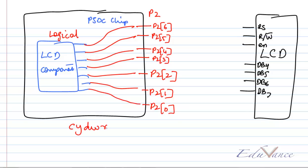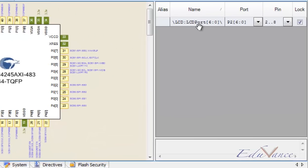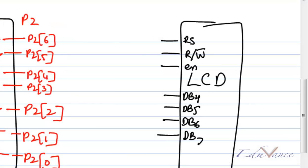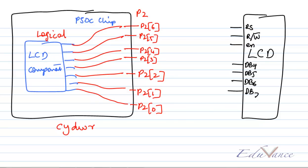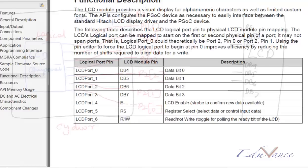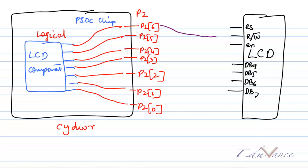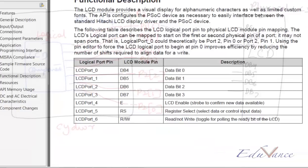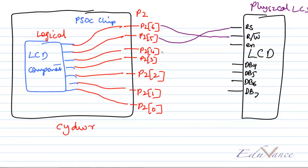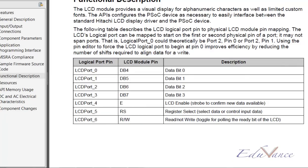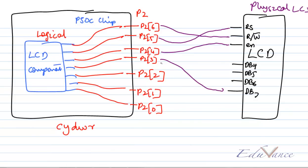This is done in your CYDWR. Here, we have mapped LCD port 6 down to 0 to the physical port P2 6 down to 0. We know that P26 is your read/write bar, P25 goes to register select, P24 would be enable, P23 would be DB7, P22 is DB6, P21 is DB5, and P20 is DB4.